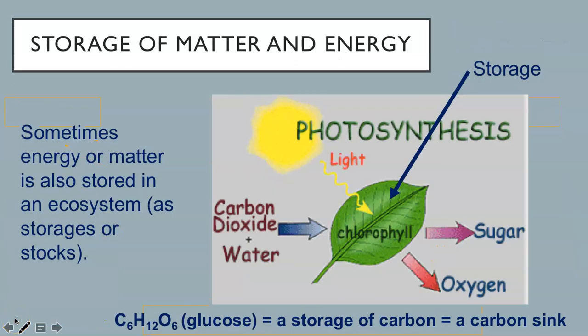Sometimes energy or matter is also stored in an ecosystem as storages or stocks. In this example, the plant is considered a storage of carbon. All of the glucose that makes up the plant keeps carbon sunk in the plant. We also refer to this as a carbon sink because as long as the plant is alive, carbon is trapped within the plant.